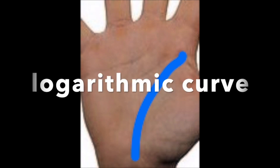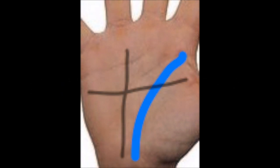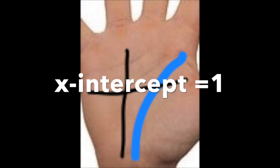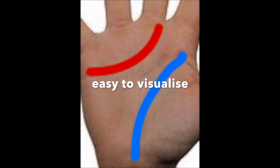The bottom fortune telling line corresponds to your log curve, which, when on an axis, actually has an x asymptote of 1 and a vertical asymptote of x equals 0.